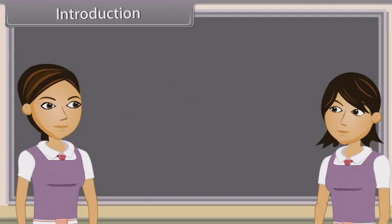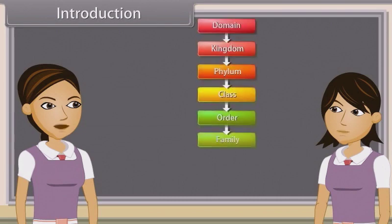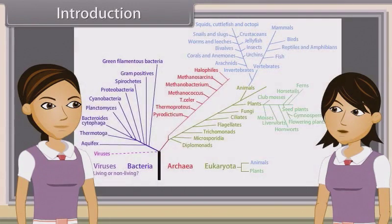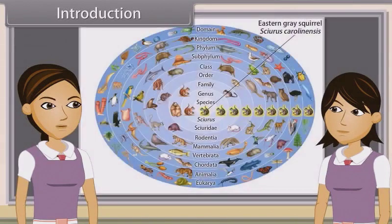Biological classification, or scientific classification in biology, is a method by which biologists group and categorize organisms by biological type, such as genus or species. Modern biological classification has its root in the work of Carolus Linnaeus, who grouped species according to shared physical characteristics. These groupings have since been revised to improve consistency with the Darwinian principle of common descent.